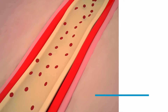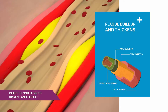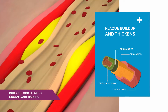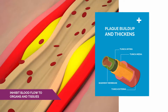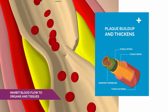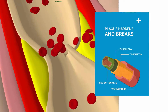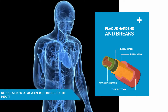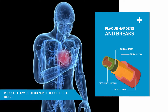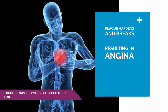Heart disease can progress in a number of different ways depending on the cause. Heart diseases generally begin with damage to the lining and inner layers of your heart arteries. Blood buildup thickens and stiffens artery walls, which inhibits blood flow to your organs and tissues. Over time, blood can harden or break open, narrowing the coronary arteries and reducing the flow of oxygen-rich blood to the heart.